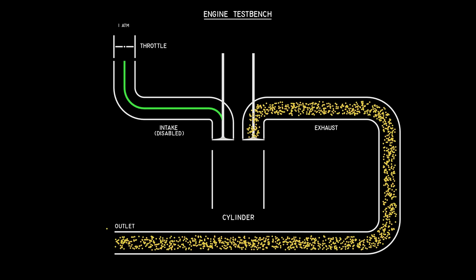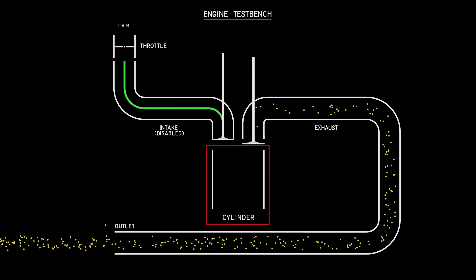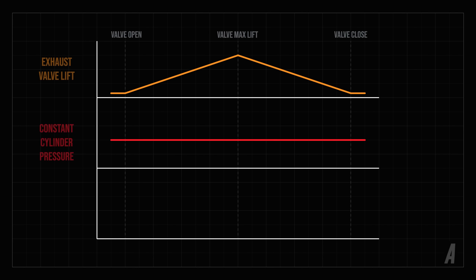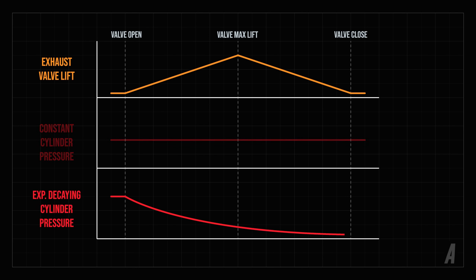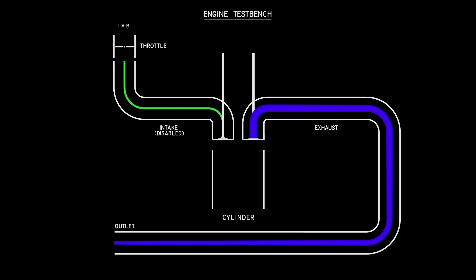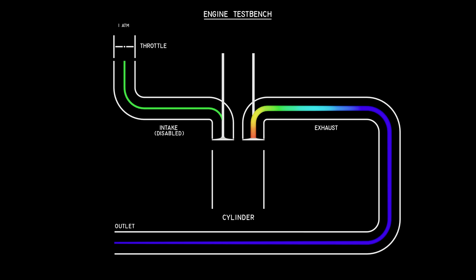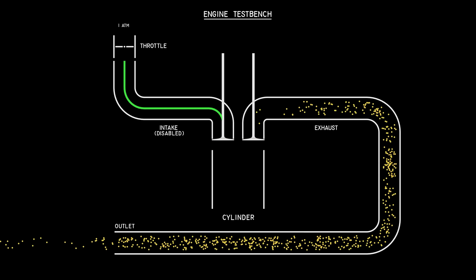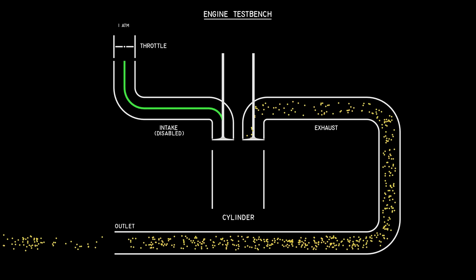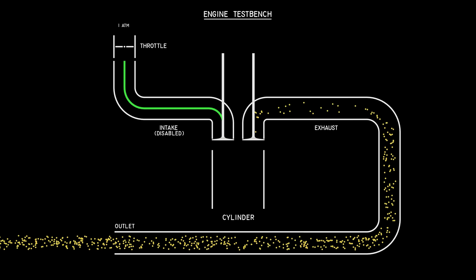Next we can turn our attention to another obvious flaw: the constant cylinder temperature and pressure which persists even after the exhaust valve is opened. Modeling the combustion chamber isn't that simple so we're not going to be covering it in this video. Instead we're just going to use a simple approximation, having the cylinder pressure fall off exponentially after the valve is opened. It's not at all physically correct but it does smooth out the sound a little bit. In a real engine the exhaust valve lift profile with respect to time will have a dramatic impact on the sound of the engine, but I'm just using a basic triangle function for now. The detailed cylinder model with a real valve lift profile should improve the sound quality quite a bit.